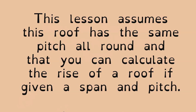If the hip line on a roof is not shown at 45 degrees, it means it isn't the same pitch all around, but that would be extremely rare. In practice, I don't think I've ever come across a roof that hasn't been the same pitch all around.